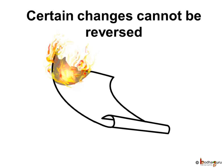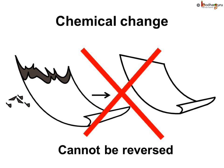But what will happen if we burn a piece of paper and it changes into ash? Is it possible to turn this ash into paper again? No, it is impossible. So there are some changes which are permanent and cannot be reversed. Such change which cannot be reversed is called chemical change.